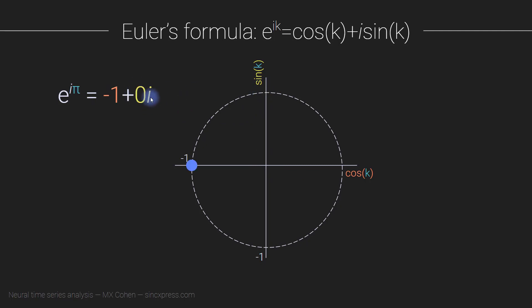All right, let's try another one. Here we have e to the i pi. So this would be the angle pi or 180 degrees relative to the positive real axis equals and then we just read this number right off the graph, we have minus one, and then zero on the imaginary axis.